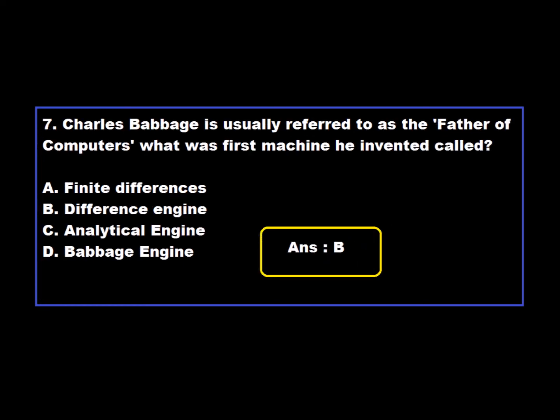Question 7: Charles Babbage is usually referred to as the father of the computer. What was the first machine he invented called? Option A: Finite Differences. Option B: Difference Engine. Option C: Analytical Engine. Option D: Babbage Engine. Option B is correct — Charles Babbage is referred to as the father of the computer and the first machine he invented was called the Difference Engine.